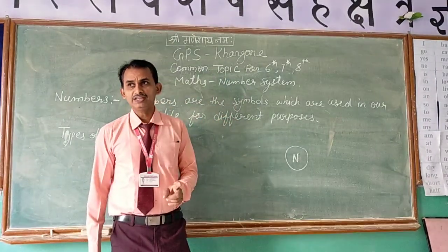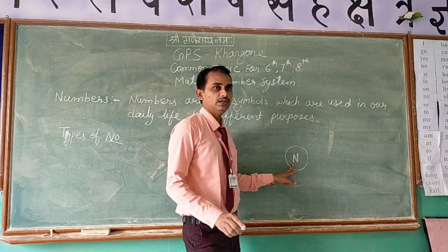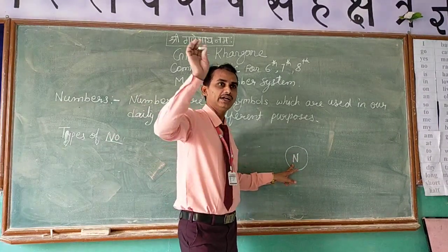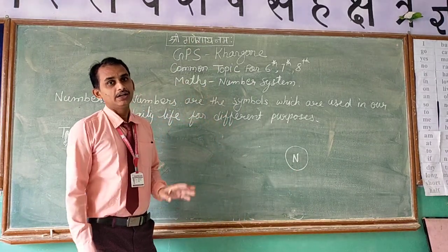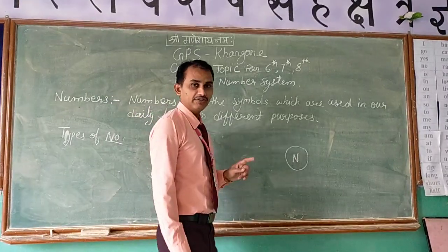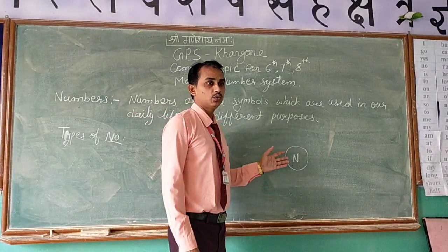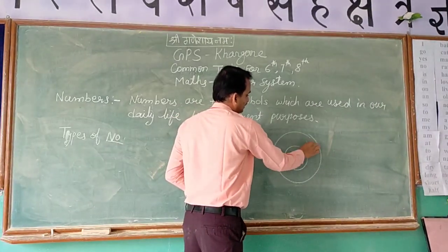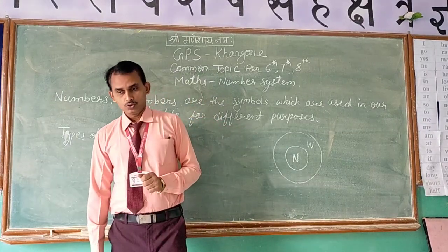Natural numbers start from 1, 2, 3, 4 and there is no end. Such types of numbers are called natural numbers. If we include 0 in this group of numbers, then our group increases and this group is known as whole numbers.